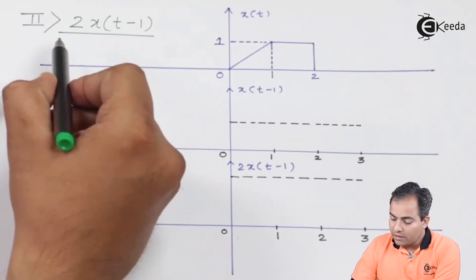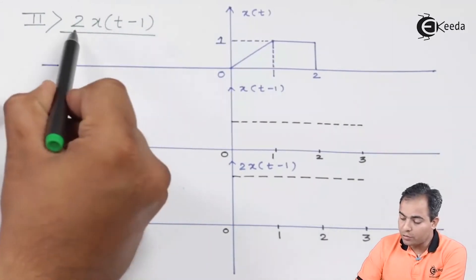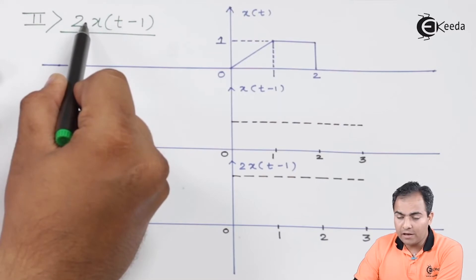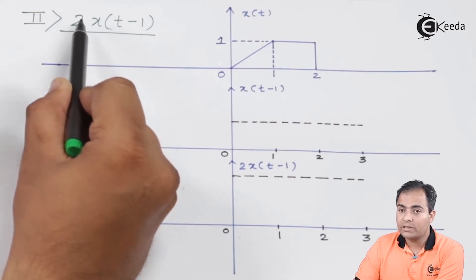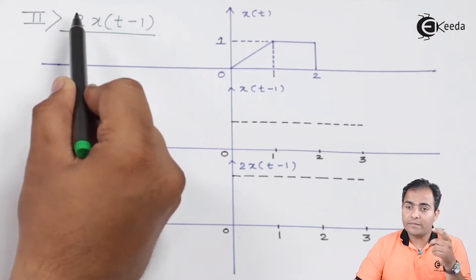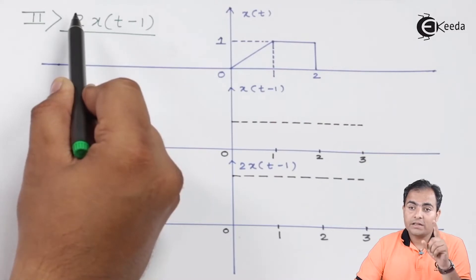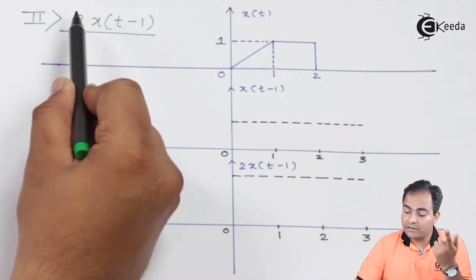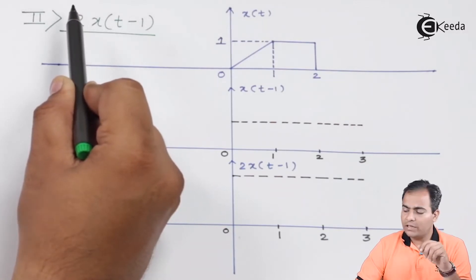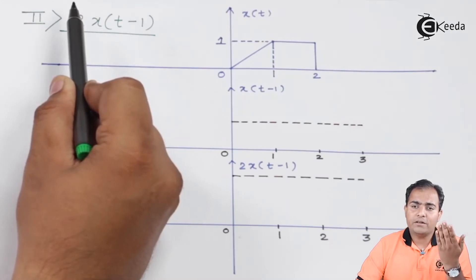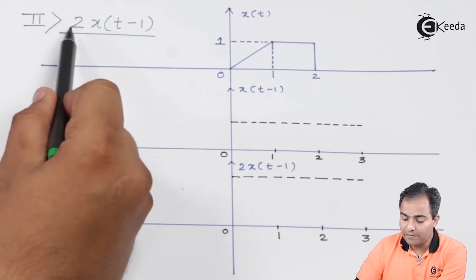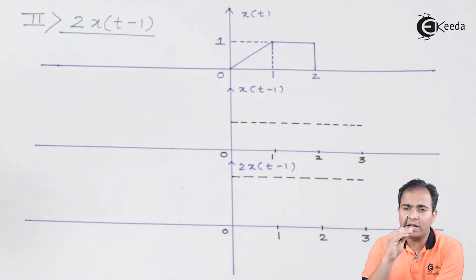The second part of this question is 2·x(t-1). The '2' stands for amplitude scaling. If the alpha value is greater than one, amplification of the graph takes place. If it is less than one, attenuation takes place. Here, alpha equals 2, which is greater than one, so the graph is amplified — multiply all amplitudes by two.